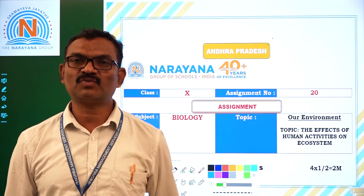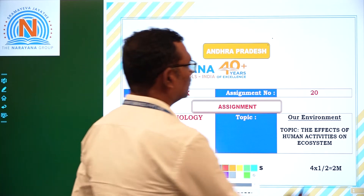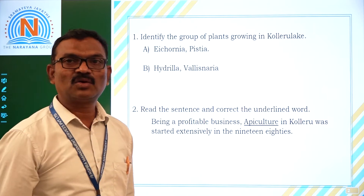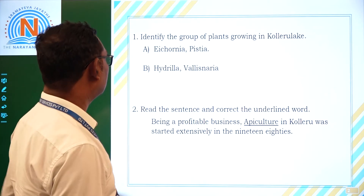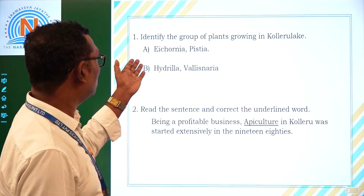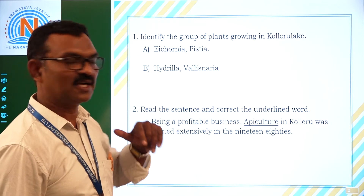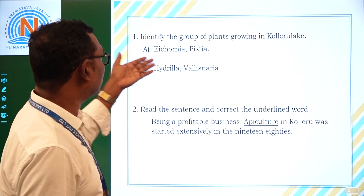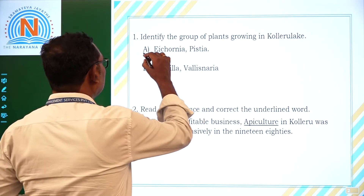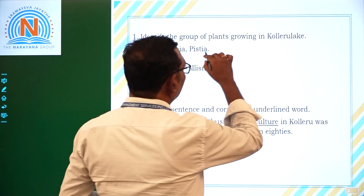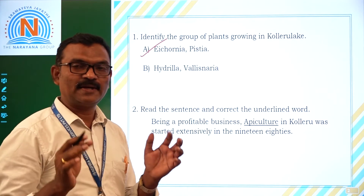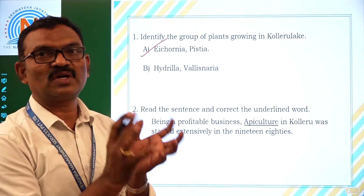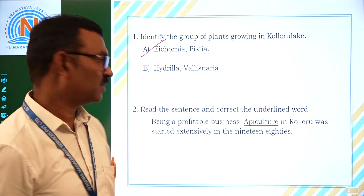The first question is: identify the group of plants growing in Collier Lake. There are Group A and Group B. Group A includes Icaria and Pistia. Group B includes Hydra and Valislamia. Icaria and Pistia is the correct group — they are growing in Collier Lake and making it uncomfortable for the growth of water animals.